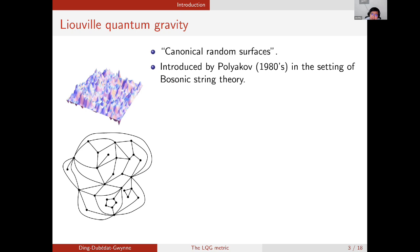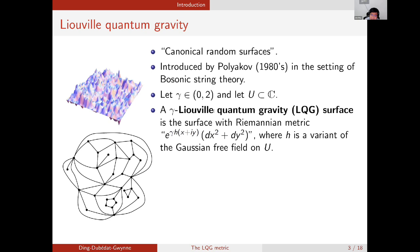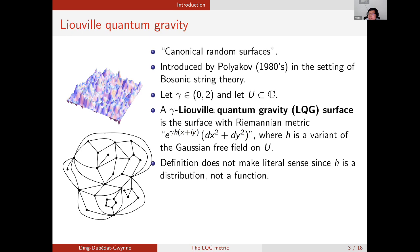To be a bit more precise, let's fix a parameter gamma between zero and two and let U be an open domain in the complex plane. Then formally speaking, a gamma-Liouville quantum gravity surface is the two-dimensional random Riemannian manifold with the metric tensor given by exponential of gamma h times the tensor for the Euclidean metric, where h is a variant of a Gaussian free field on the domain U. For the purpose of appreciating this talk, the precise definition of the Gaussian free field is not so important. We only need to know that a Gaussian free field is a canonical random height function as shown in the top left corner.